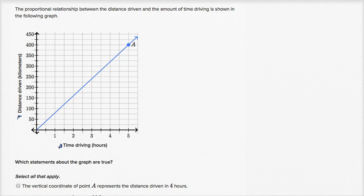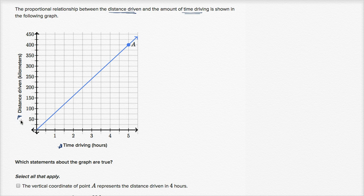Let's get some practice interpreting graphs of proportional relationships. The proportional relationship between the distance driven and the amount of time driving is shown in the following graph. We have the distance driven on the vertical axis, measured in kilometers, and the time driving on the horizontal axis, measured in hours.